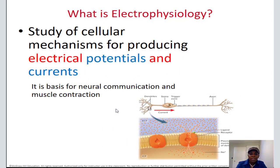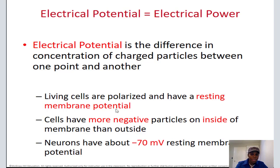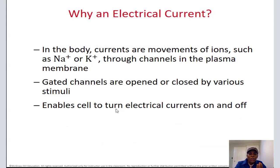So what is electrophysiology? It is the study of mechanisms for producing electrical potentials and currents. Electrical potential is just the difference in concentration between the ions inside and outside the cell — it's like electrical power. It's the power you have when there's a lot of stuff inside that will go out, or a lot outside that will go in. Living cells are polarized — inside negative and outside positive — which creates attraction between positive and negative ions, and creates power for movement.